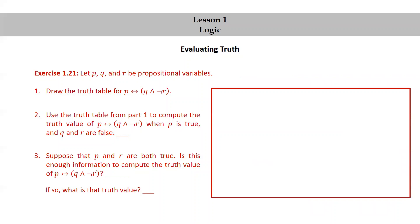Let's finish up this section with an exercise. Let p, q, and r be propositional variables. Draw the truth table for p if and only if q and not r. Use the truth table from part one to compute the truth value of p if and only if q and not r when p is true and q and r are false. And suppose that p and r are both true — is this enough information to compute the truth value of p if and only if q and not r? Now is a good time to pause the video, try this exercise yourself, and then resume when you're ready to check your answers.